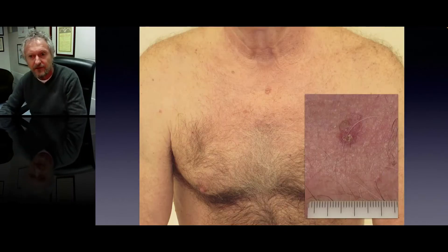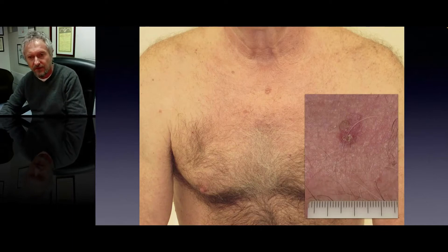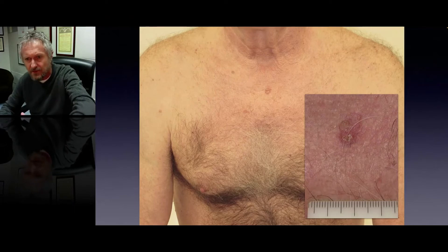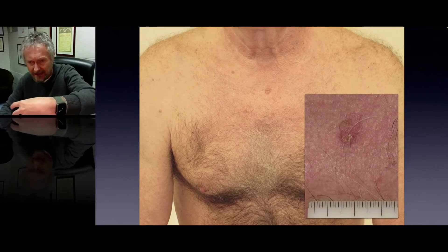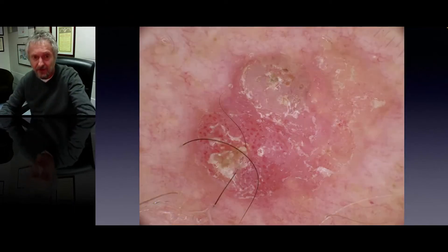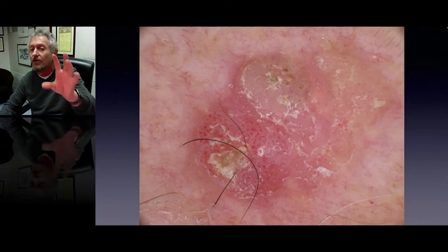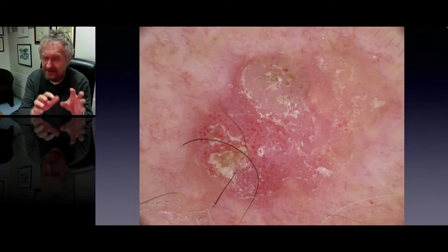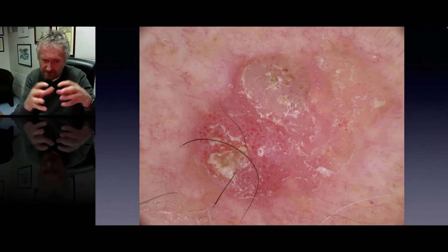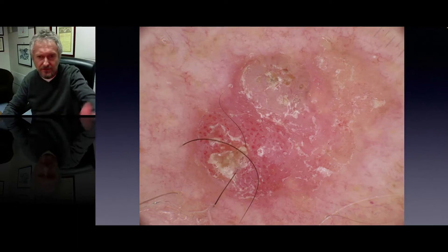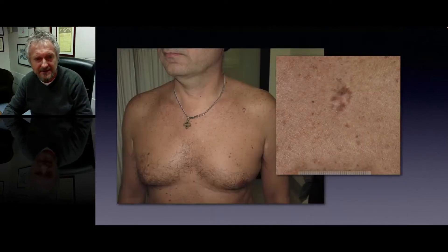This is a newly discovered dermoscopic criterion. Here is a good example of a non-pigmented Bowen's disease where you can see clinically a scaling plaque, and dermoscopically, look how beautiful these glomerular vessels are — usually packed closely together in clusters within the lesion, with additional scale crusts.